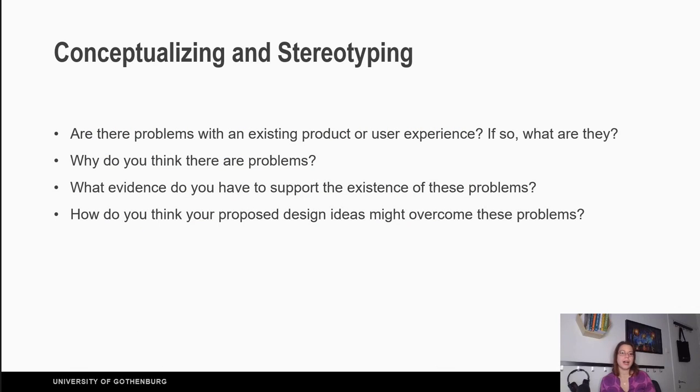First, are there problems with an existing product or user experience? If so, what are they? Second, why do you think there are problems? Third, what evidence do you have to support the existence of these problems? And finally, how do you think your proposed design ideas might overcome these problems?